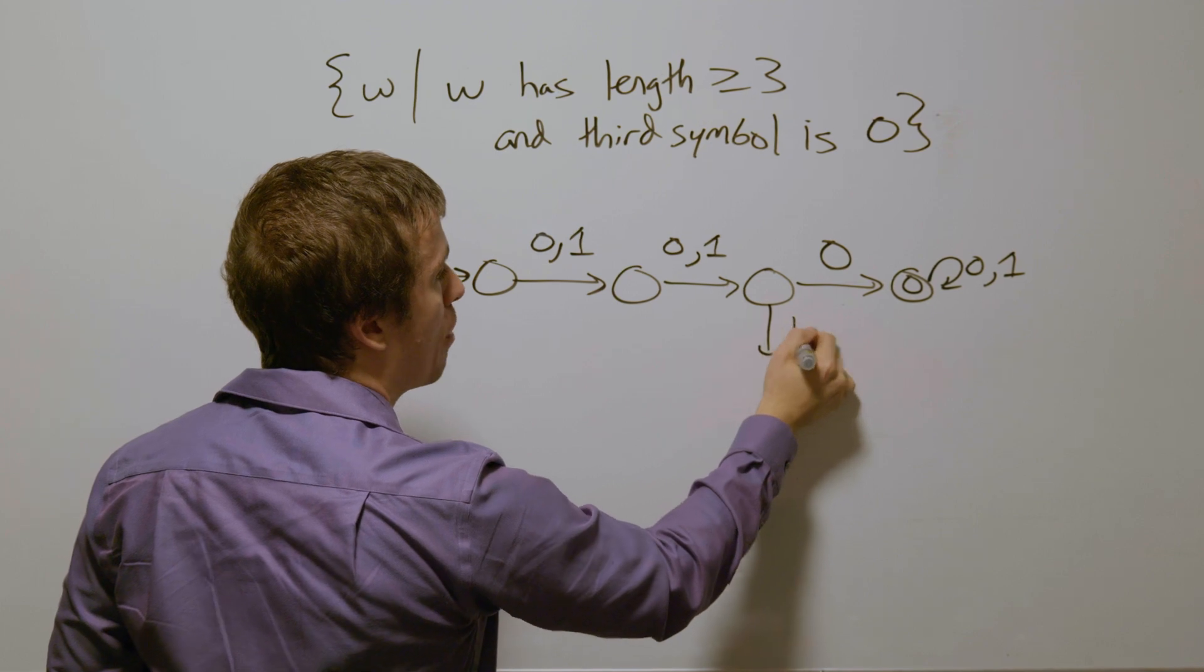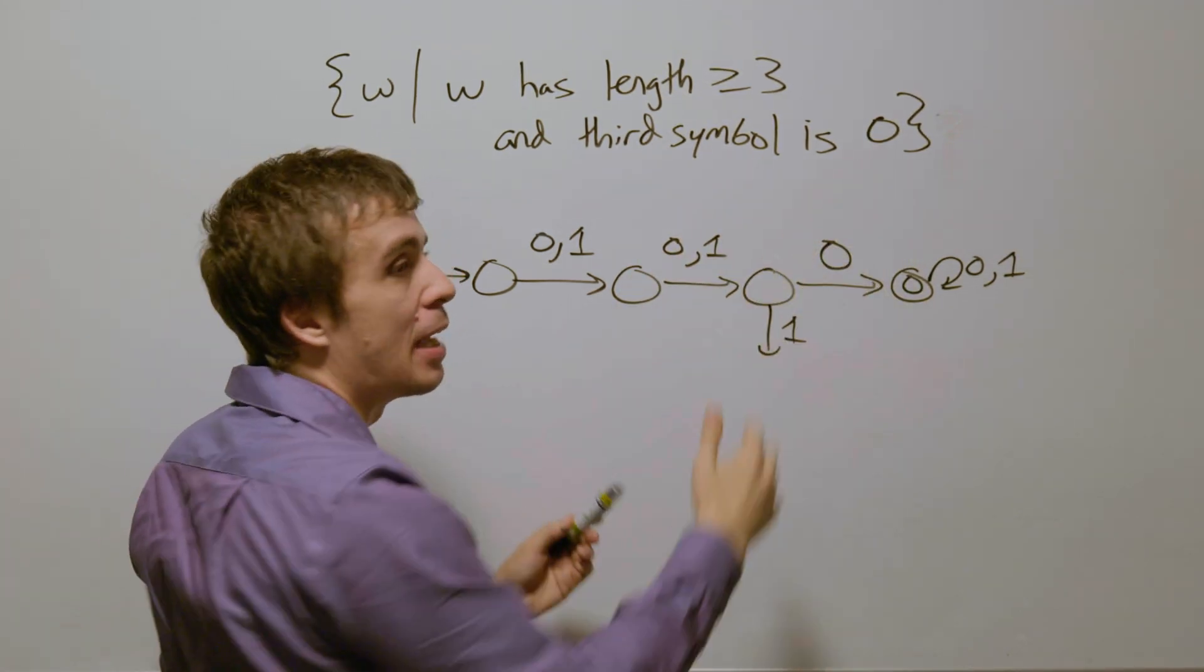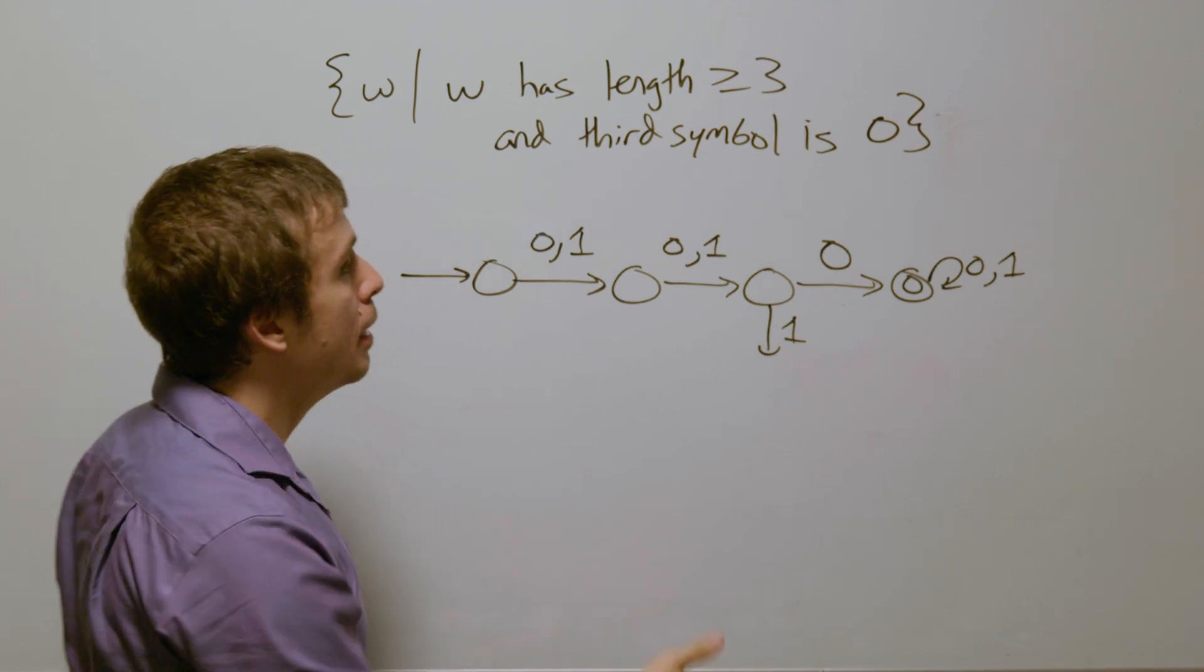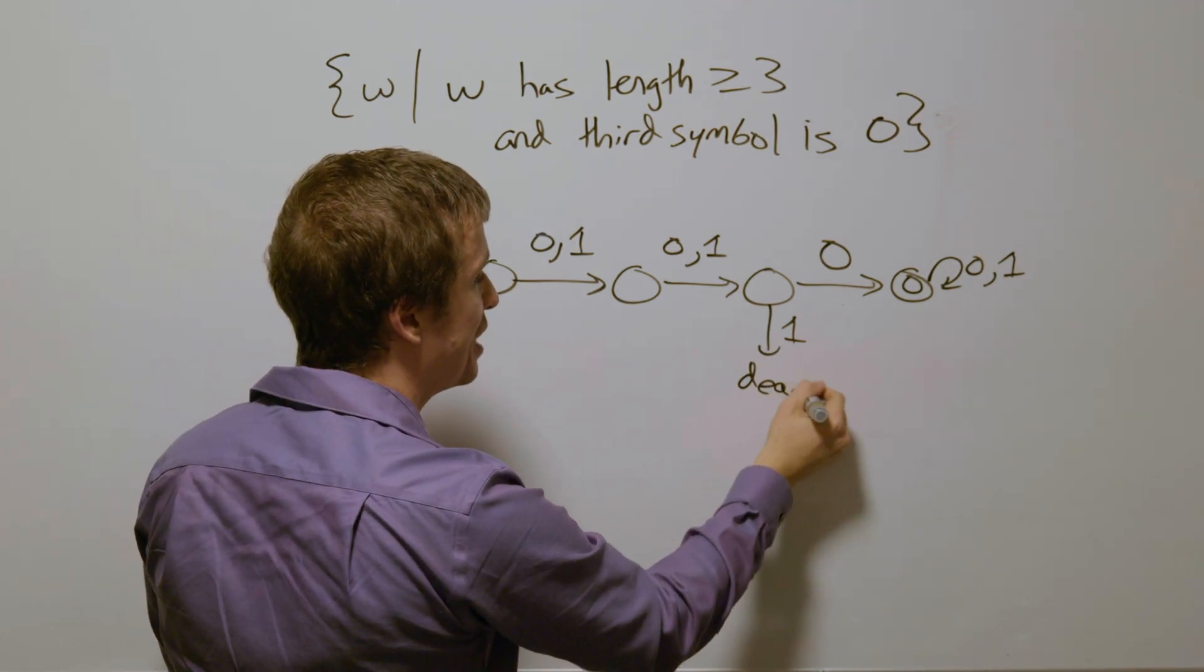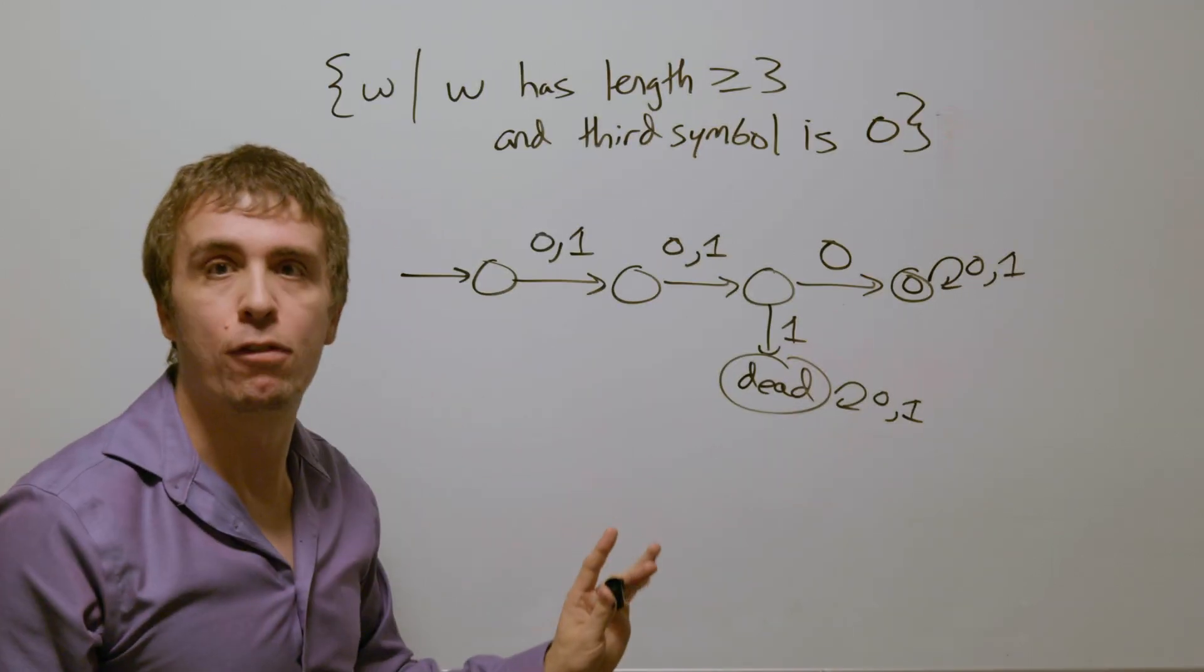But if we have a one right here, then that has violated this condition and there's no way of fixing it. Therefore, this needs to go to a dead state, which is going to loop on zero and one and never accept.